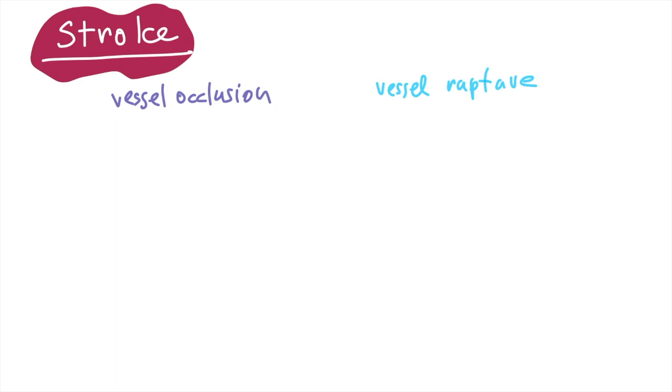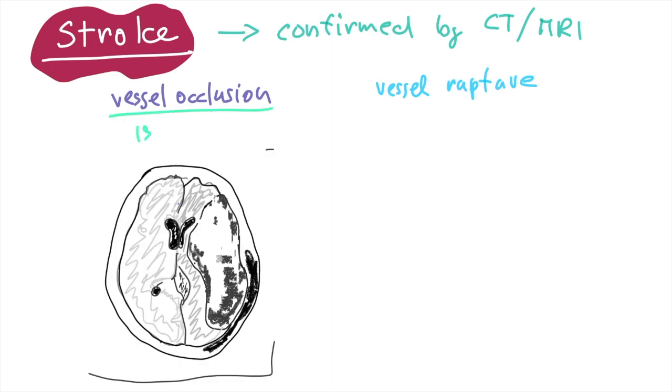So in other words this means that the structural CNS lesions in stroke are in majority of cases confirmed by a CT or MRI scan. In case of vessel occlusion we call this ischemic stroke.